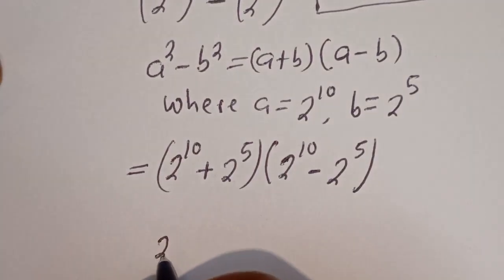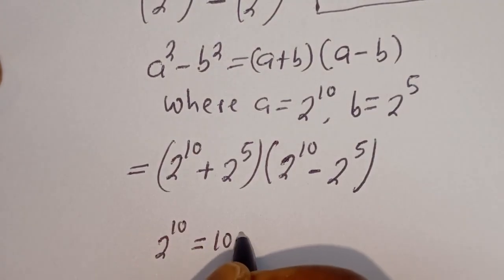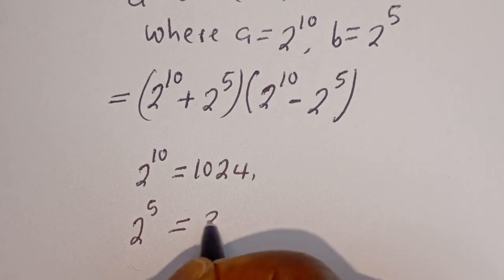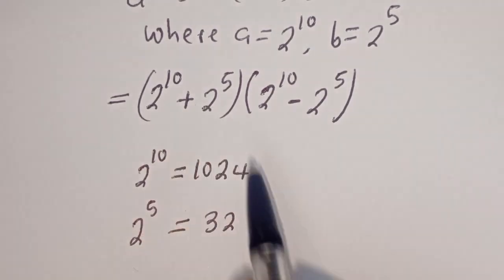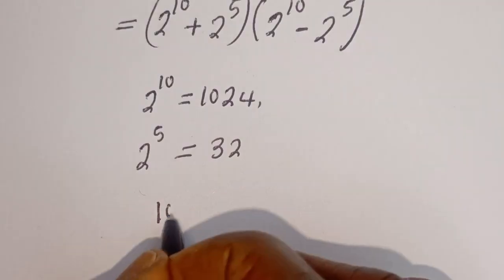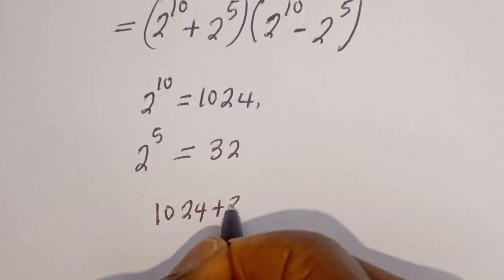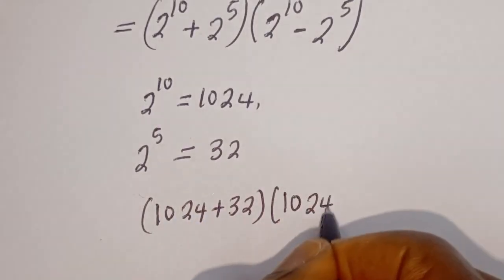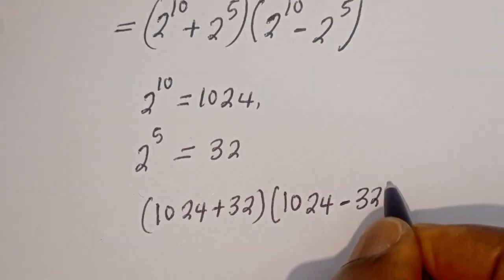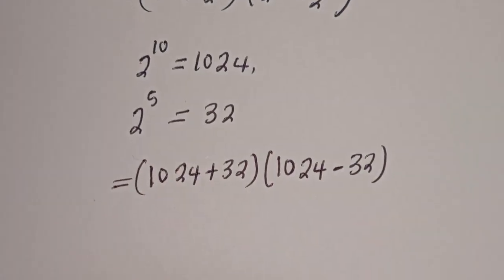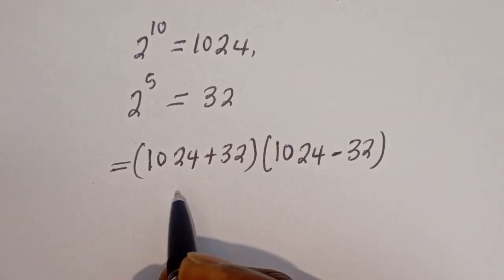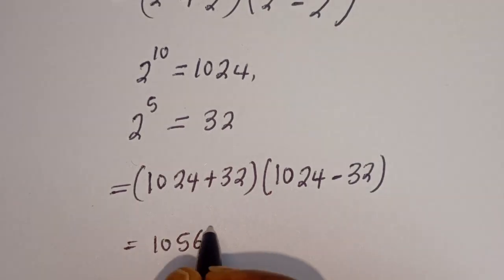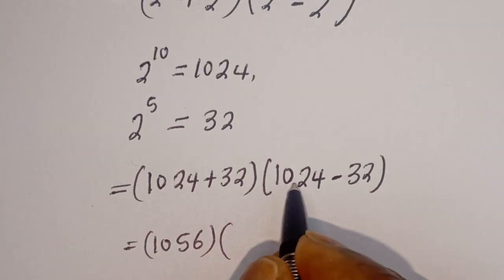Now, 2 to the power of 10 is equal to 1024, and 2 to the power of 5 is equal to 32. So we have: 1024 minus 32 is 992, and 1024 plus 32 is 1056. This gives us 1056 bracket 1024 minus 32, which is 1056 bracket 992.